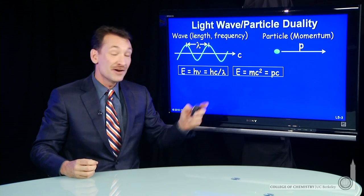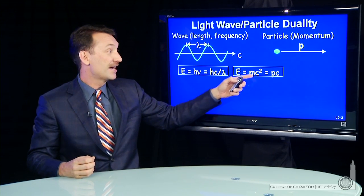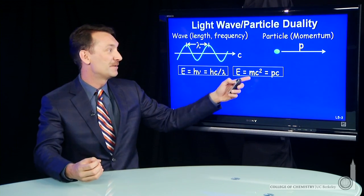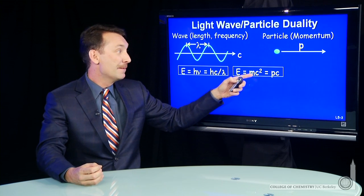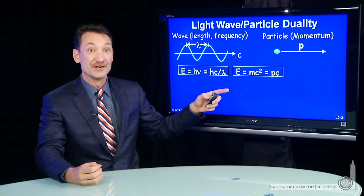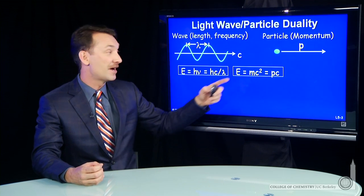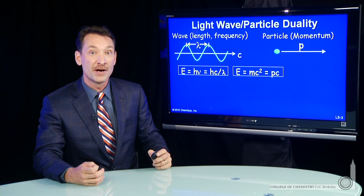But we can say the energy of the particle, use Einstein's equation for relativistic particles, moving near the speed of light. mc squared is the energy. Now we have two expressions for the energy, the energy of the photon and the relativistic energy mc squared.